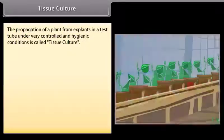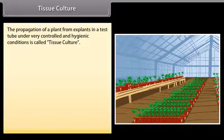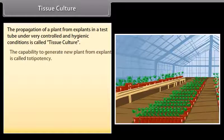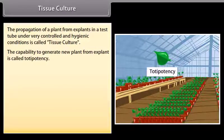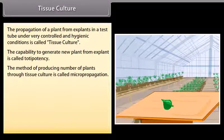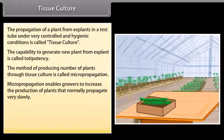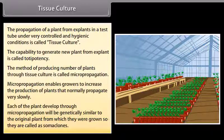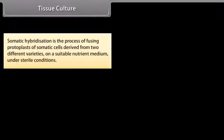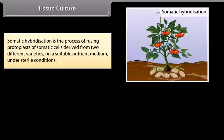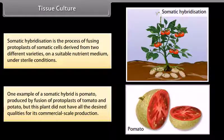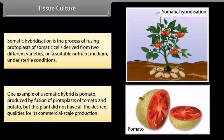Tissue culture: The propagation of a plant from explants in a test tube under very controlled and hygienic conditions is called tissue culture. The capability to generate a new plant from an explant is called totipotency. This method of producing plants through tissue culture is called micropropagation. Micropropagation enables growers to increase production of plants that normally propagate very slowly. Each plant developed through micropropagation is genetically similar to the original, so they are called somaclones. Somatic hybridization is the process of fusing protoplasts of somatic cells from two different varieties; one example is pomato, produced by fusion of protoplasts of tomato and potato, though it lacked desired qualities for commercial production.